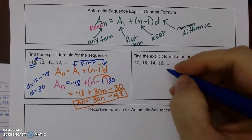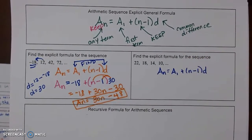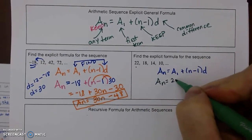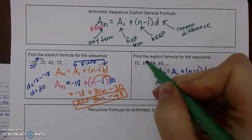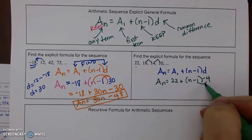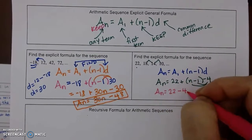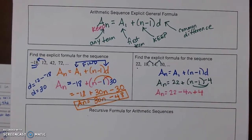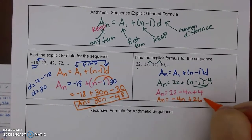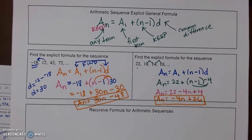For the second example, keep the general formula and substitute: first term is 22, and the common difference is -4 since we're subtracting 4. Distribute the -4: a sub n = 22 + (-4)(n - 1) = 22 - 4n + 4. Combining integers: the final formula is a sub n = -4n + 26. The order of terms doesn't matter since they're added, but the signs do.